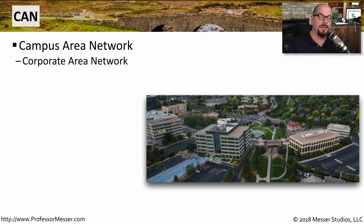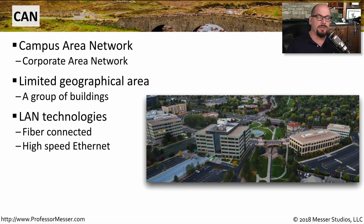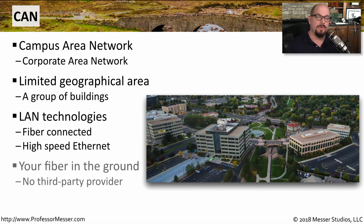If the company you work for occupies multiple buildings inside of an office park, or you've ever taken a class on a college campus, then you're probably familiar with a CAN, or a campus area network. This campus is usually a group of buildings that are relatively close to each other, close enough that you could extend network connections so that all of the buildings would effectively be on the same network. It's very common in campus area networks to connect all of these buildings together with fiber and run high-speed Ethernet, especially when many people inside one building need to access resources in another. One of the nice things about a campus area network is that you can put your own conduit between the buildings and run your own fiber, without paying a monthly cost to a service provider — simply connect two switches at the end of the fiber and the two buildings are connected directly.